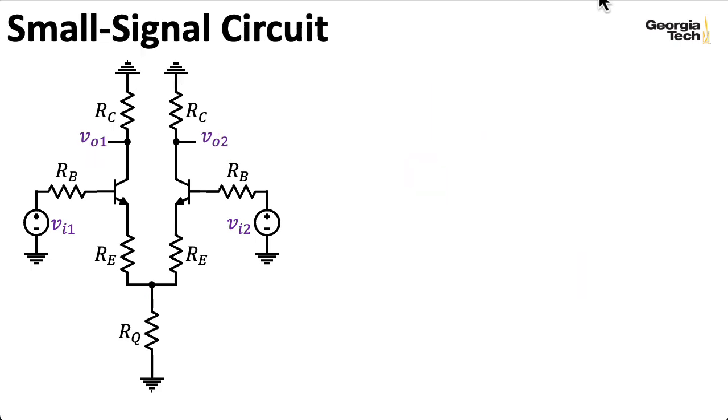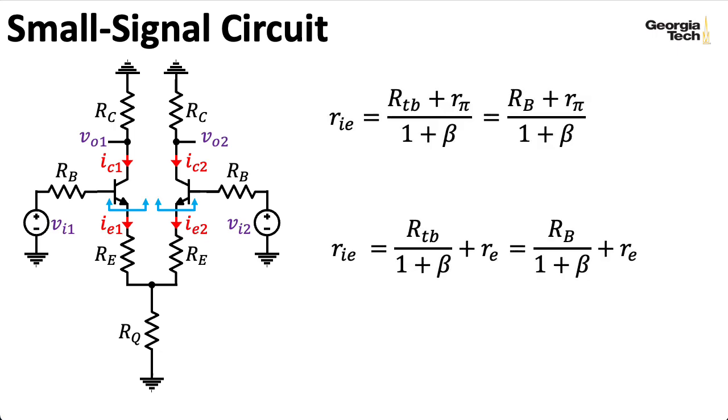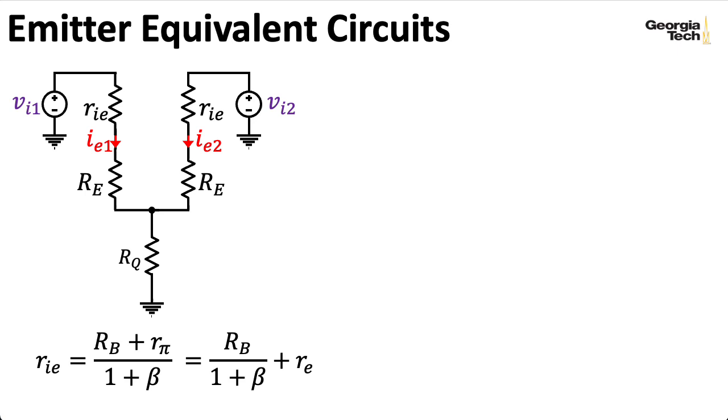So in the previous lectures, instead of tackling the circuit by going directly to the small signal collector currents, we first focused on the small signal emitter currents. We replaced the upper part of the circuit with the Thevenin equivalent resistance seen looking into the emitters. Recall that RIE, the Thevenin equivalent resistance seen looking into the emitter, is given by these expressions, where RTB is the Thevenin equivalent resistance seen looking out of the base, which here is given by RB. That gave us a circuit that looked like this.